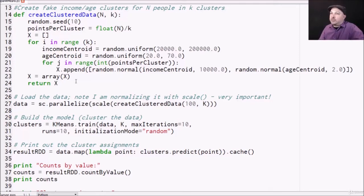Alright, so that returns a NumPy array of our fake data. Now the other thing we're doing, so once that result comes back from create cluster data, I'm calling scale on it. And that will ensure that my ages and incomes are on comparable scales.